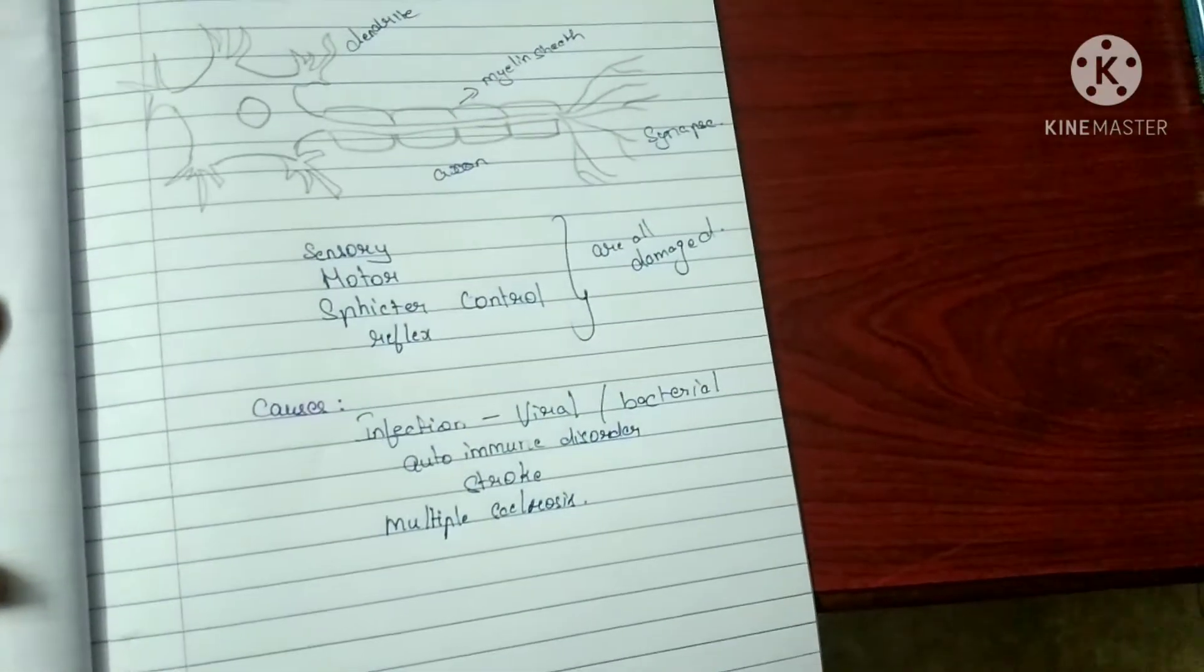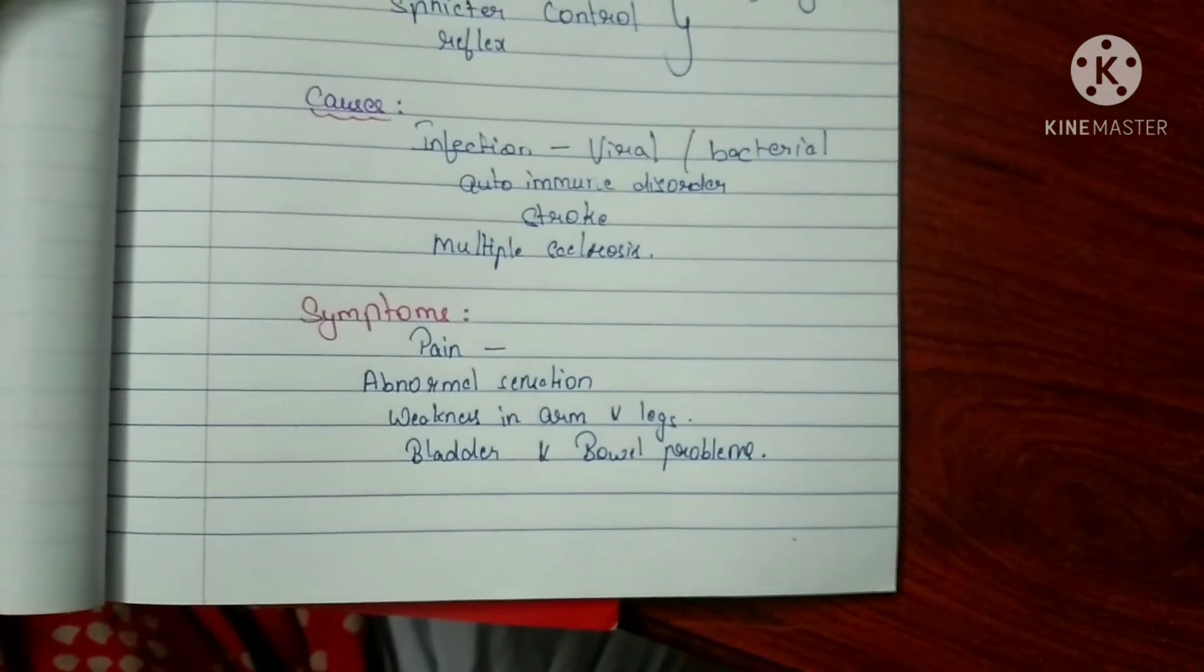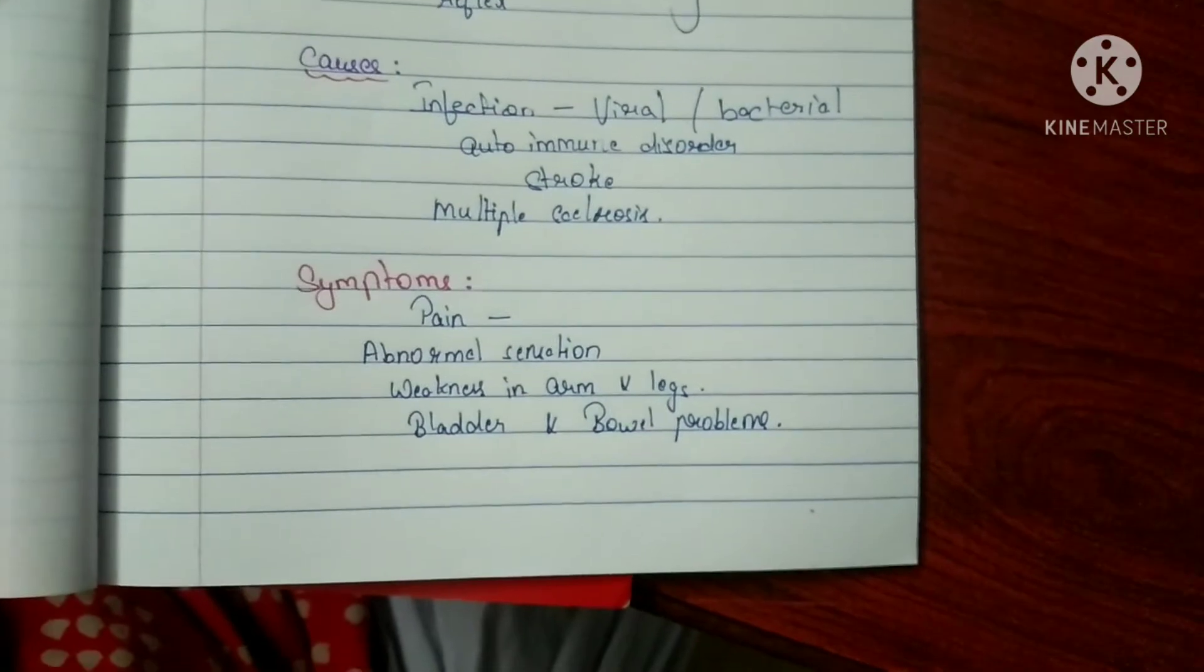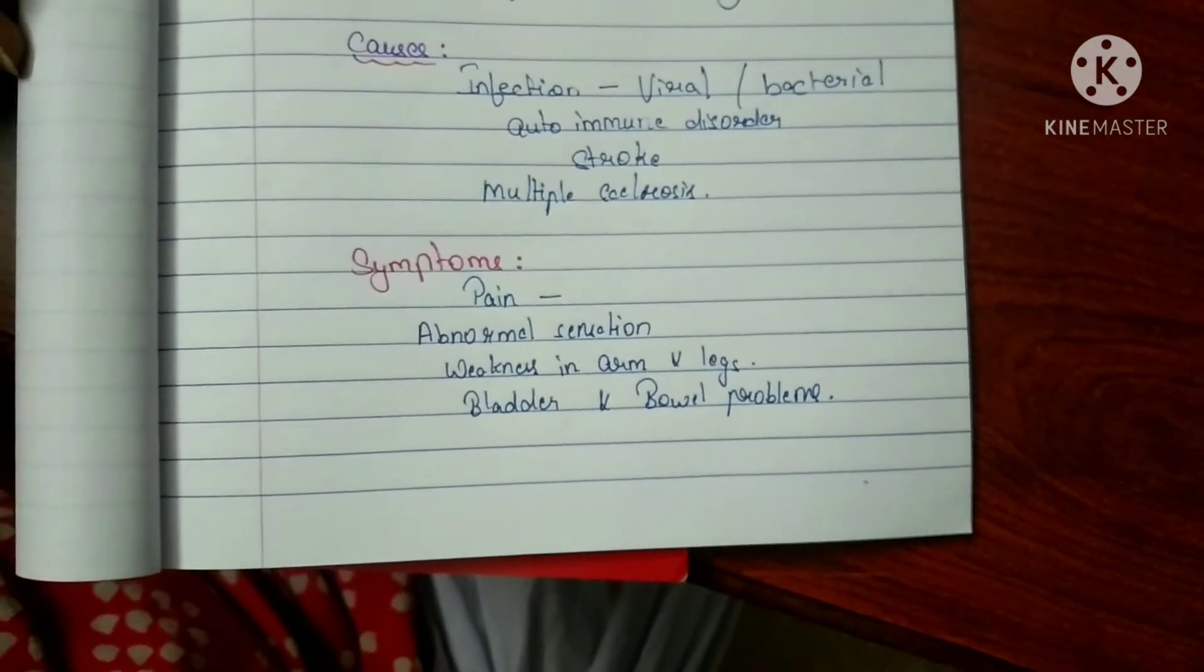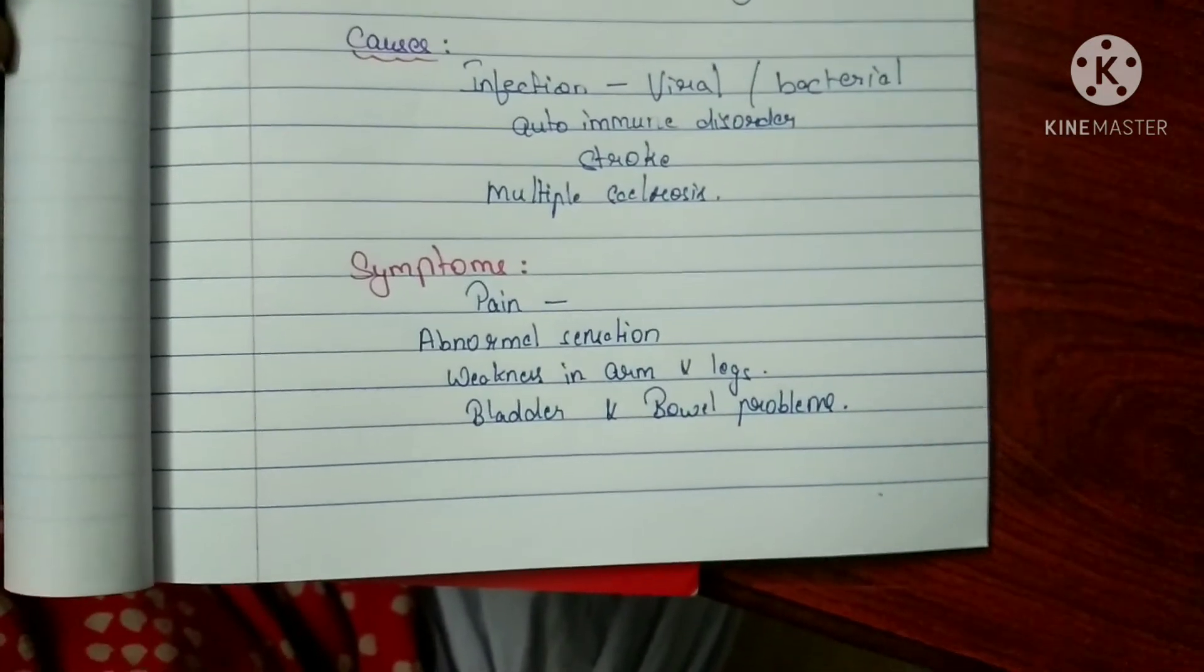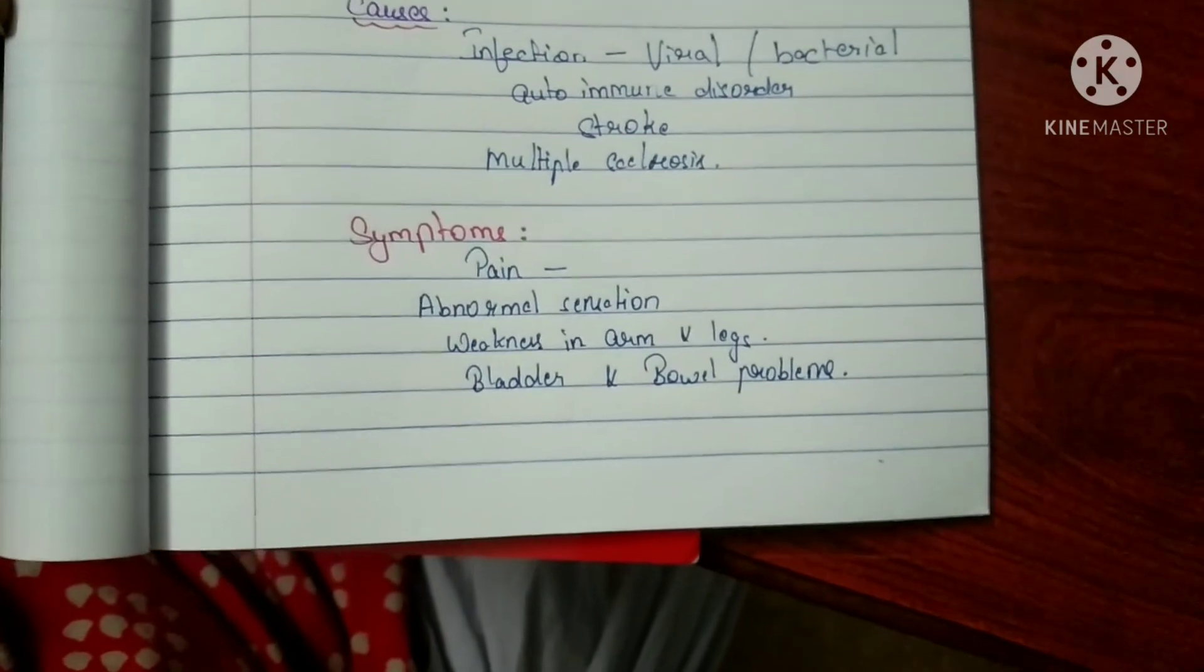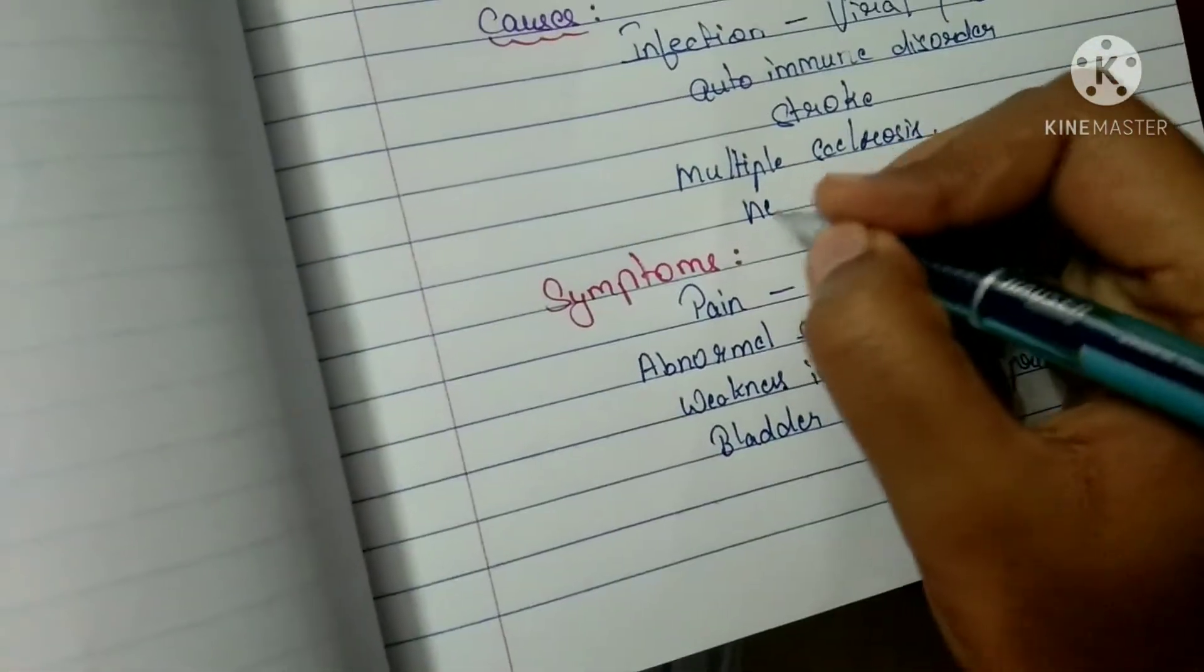The symptoms include pain in the lower back, arms, and legs, and abnormal sensations like tingling, numbness, and pricking sensations. Weakness will be there, and tenderness even with slight pressure. Bladder and bowel control will be lost.